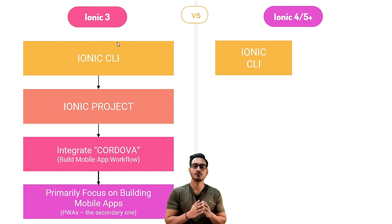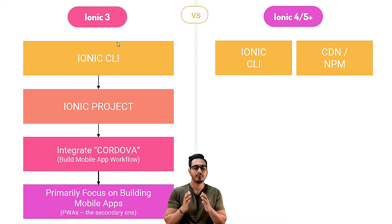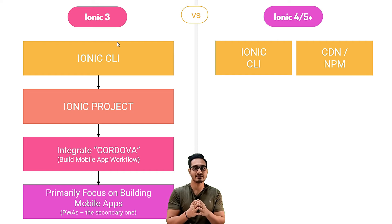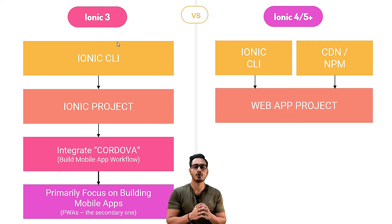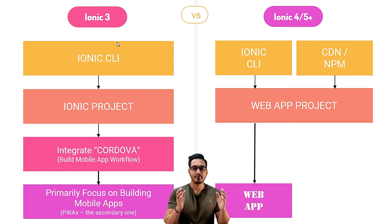In Ionic 4, we also install the Ionic CLI, but additionally we can use CDN or npm — the Ionic CLI is not strictly required. I'm not covering the CDN approach in this course since the Ionic CLI is a good way to build web apps or native applications, but there is official Ionic documentation covering CDN and npm. Once the web app project is properly built, we can prepare a web application from it.